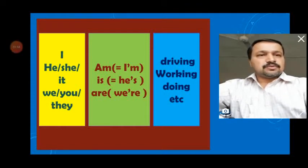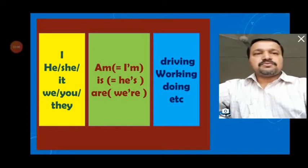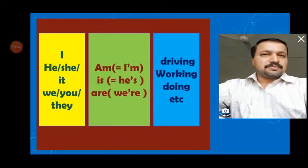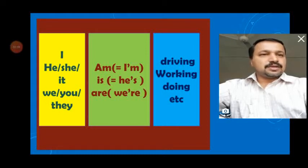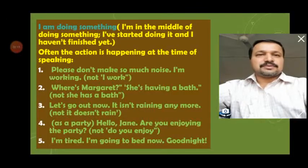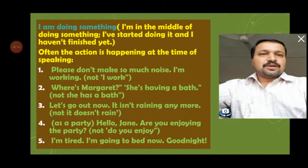When we want to make questions, we move 'am,' 'is,' or 'are' in front of the subject. So the sentence changes to a question: 'I am driving' → 'Am I driving?'; 'She is driving' → 'Is she driving?'; 'We are doing' → 'Are we doing?' This is the easy way to make questions and negatives.